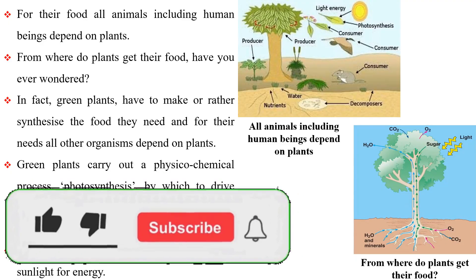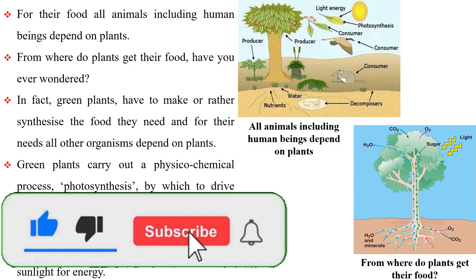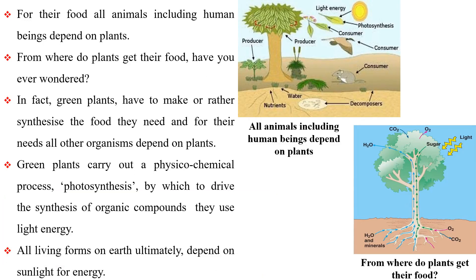For their food, all animals, including human beings, depend on plants. From where do plants get their food? Have you ever wondered? In fact, green plants have to make or rather synthesize the food they need, and for their needs all other organisms depend on plants. Green plants carry out a physico-chemical process called photosynthesis, by which they use light energy to derive the synthesis of organic compounds. All living forms on Earth ultimately depend on sunlight for energy.